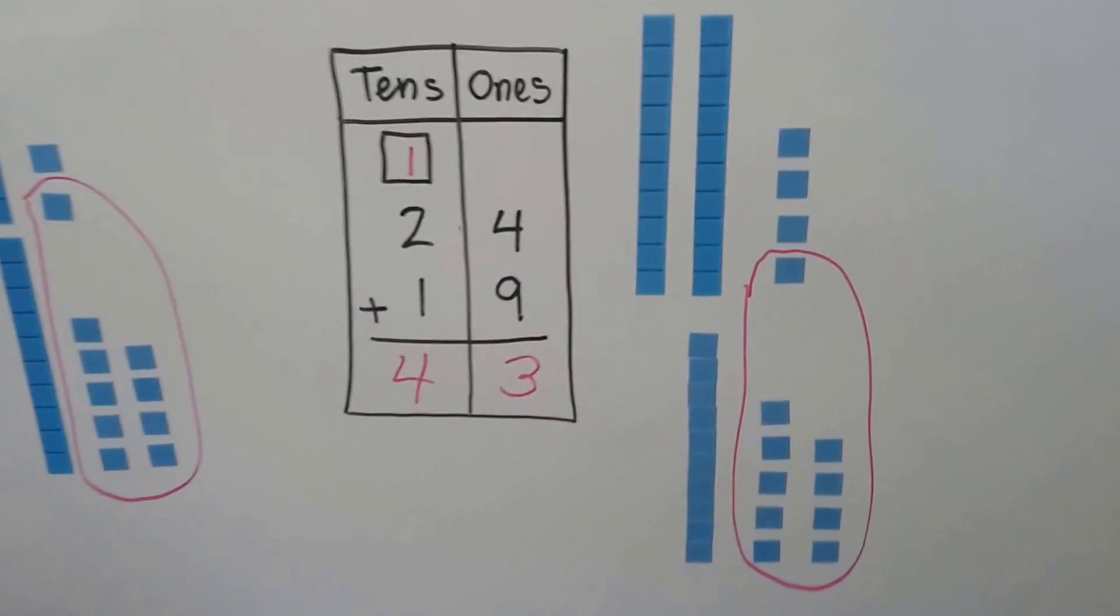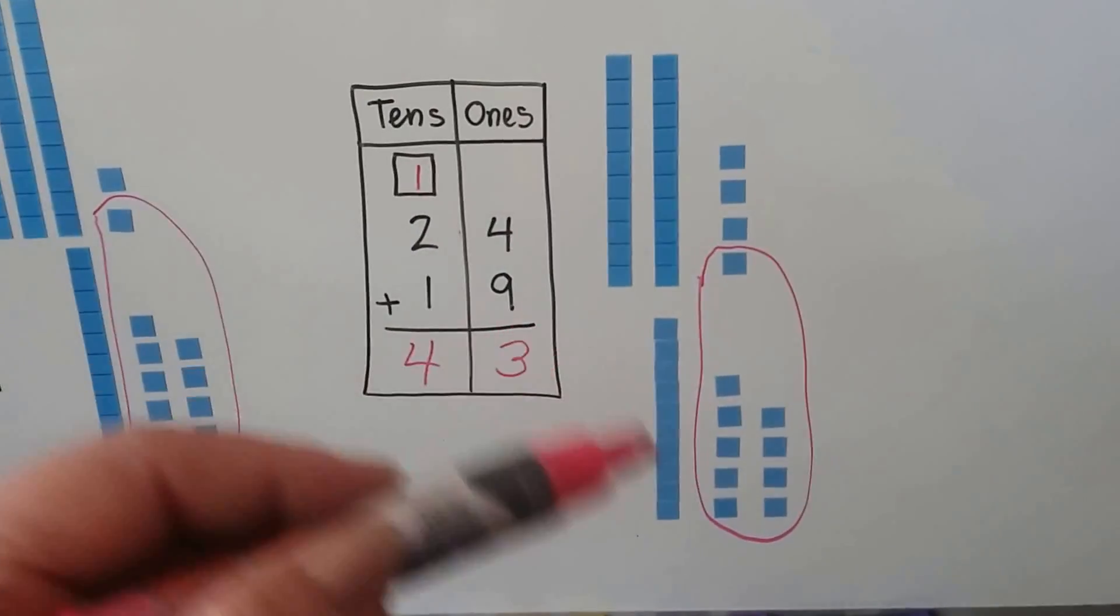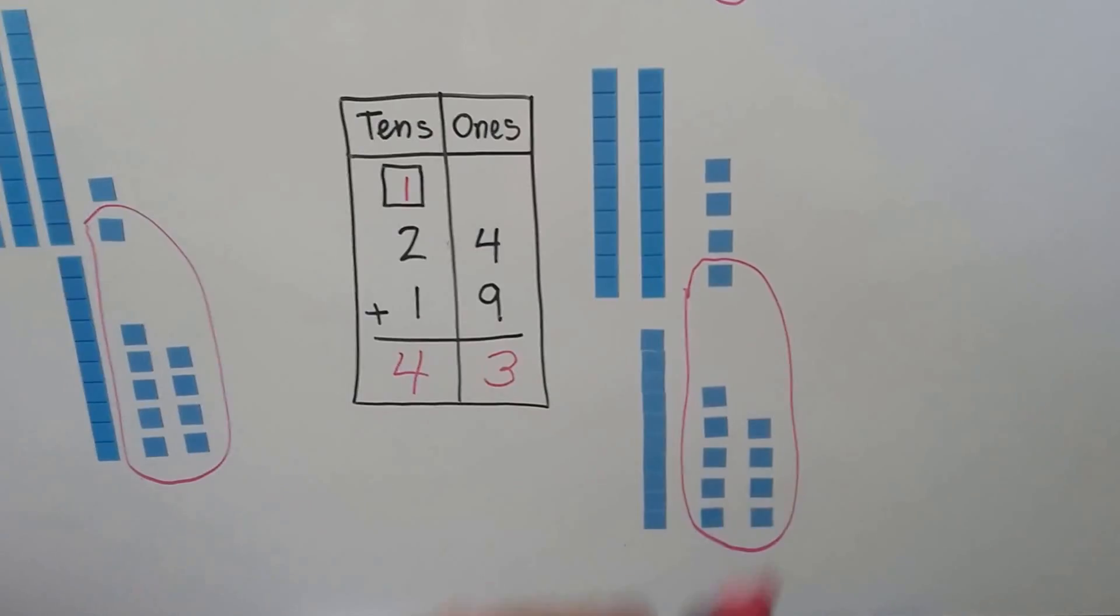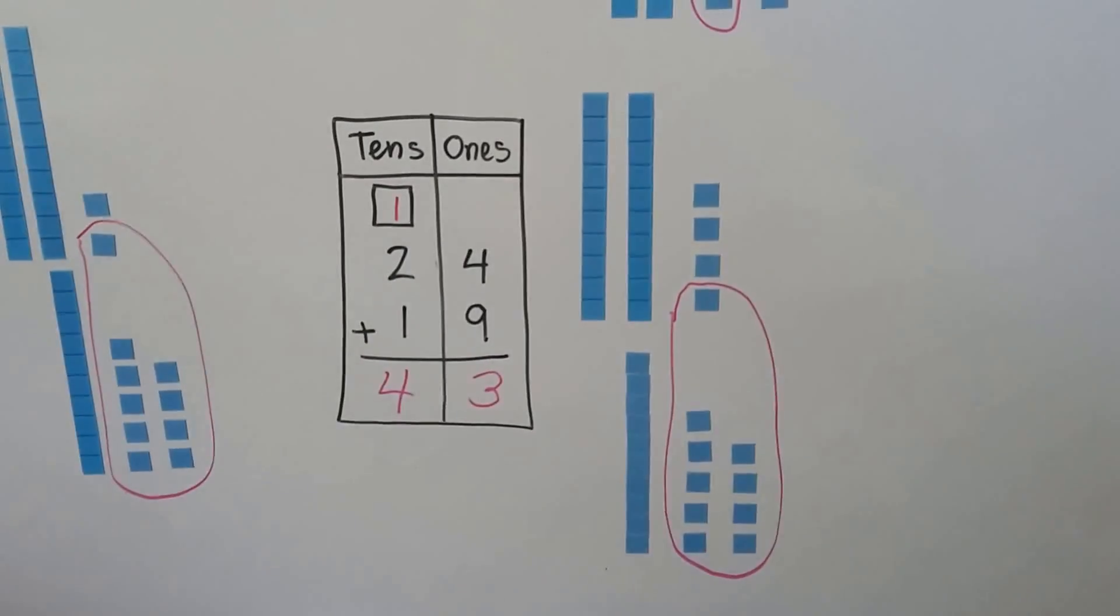So it's pretty much the same as what we were doing, but now instead of moving models around, we just circle the ones that make a 10 and regroup it and add it to the tens place. Let's try some problem solving.